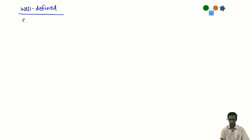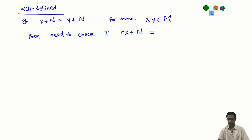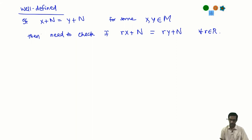Well-definedness means checking the following: suppose two different elements x and y give rise to the same coset, then we need to check that rX+N equals rY+N, and this should be true for any ring element r chosen. So if X+N = Y+N, that means x minus y is an element of N.